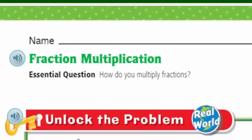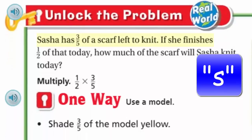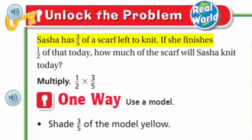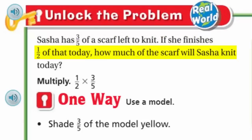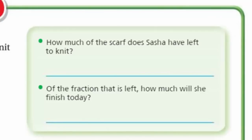But you know, like we always say, we can't do any of that unless we unlock the problem. That's right, my friends — it's real world, baby! It says, Sasha has three-fifths of a scarf left to knit. If she finishes one half of that today, how much of the scarf will Sasha knit today?